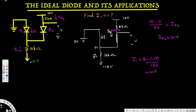So 2 milliamps is entering the node and 1 milliamp is going toward the 10k resistor. According to Kirchhoff's current law, 1 milliamp should be going through the diode. But for diode 1, this is the anode and this is the cathode — the current would have to flow in the reverse direction, meaning it would be negative. That means our short circuit assumption is wrong, and diode 1 is off and in reverse bias.